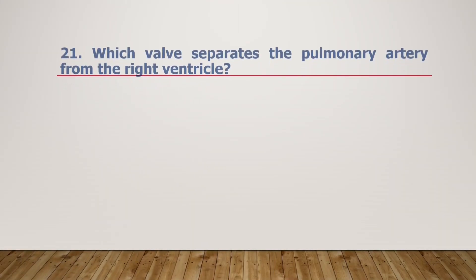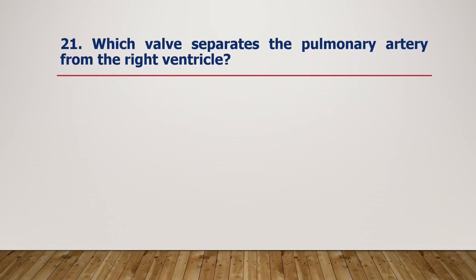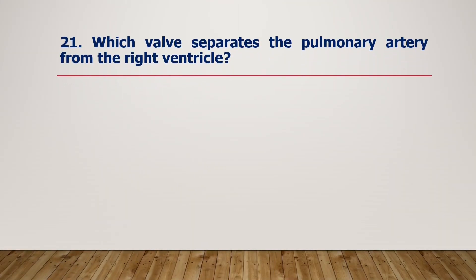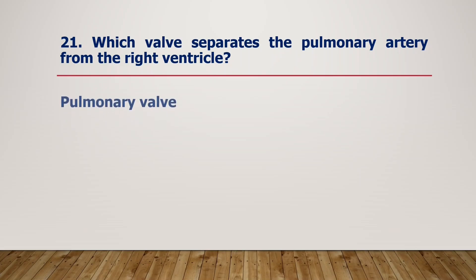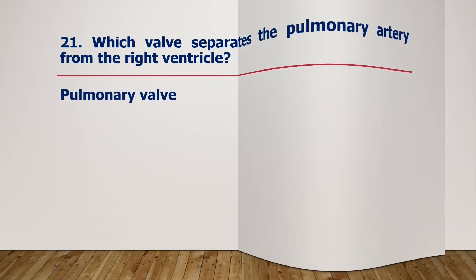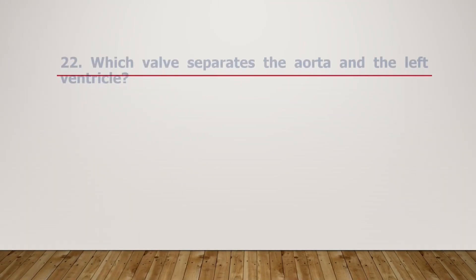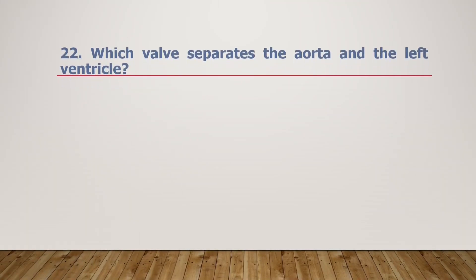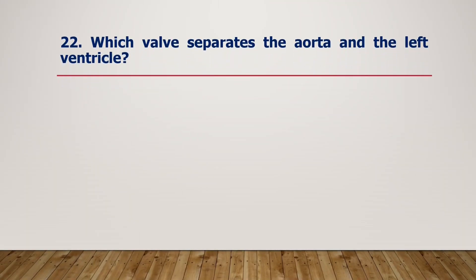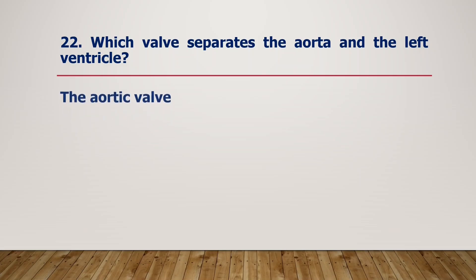Which valve separates the pulmonary artery from the right ventricle? The pulmonary valve separates the pulmonary artery from the right ventricle. Which valve separates the aorta and the left ventricle? The aortic valve separates the aorta and the left ventricle.